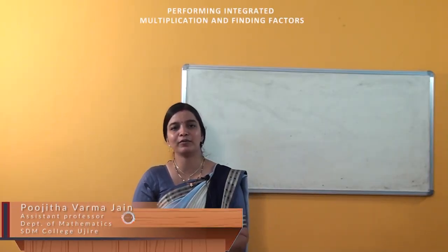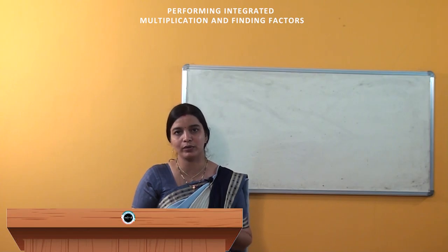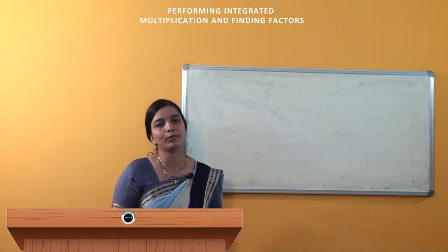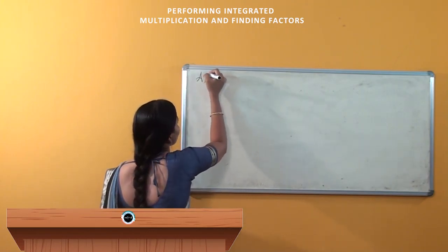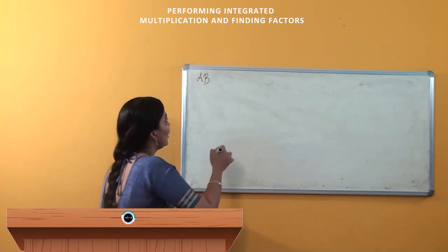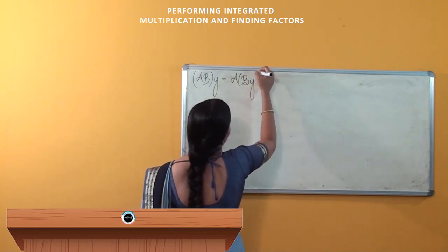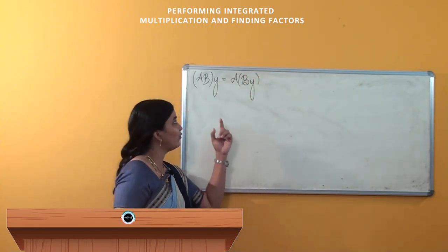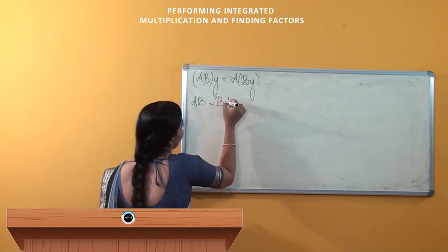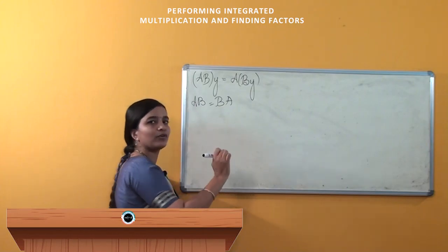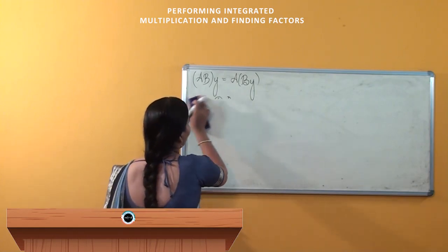Dear students, we have previously learned about differential equations — homogeneous and non-homogeneous linear differential equations — and differential operators. We have seen that if A and B are differential operators of order n, then AB into y equals A into By. If the coefficients of the differential operators are constants, then AB equals BA. If there are variable coefficients, then AB may or may not equal BA.